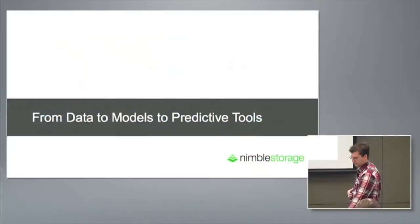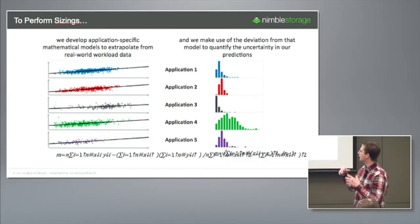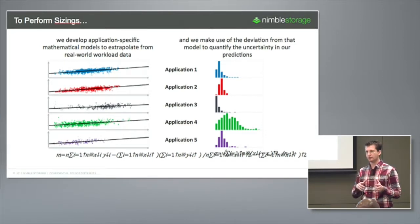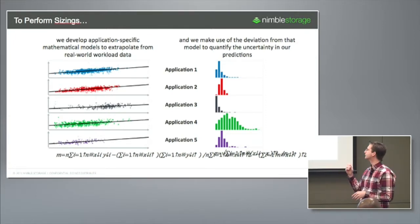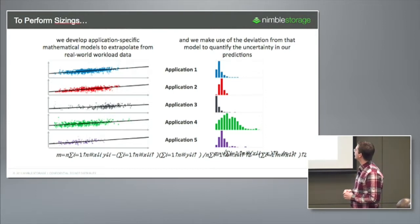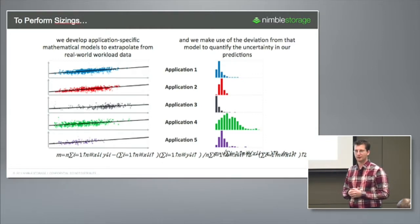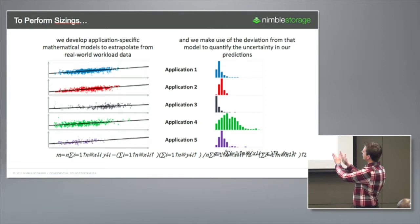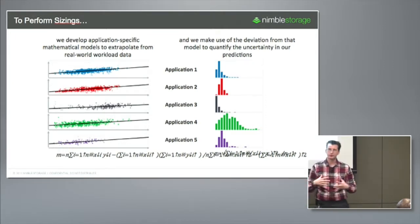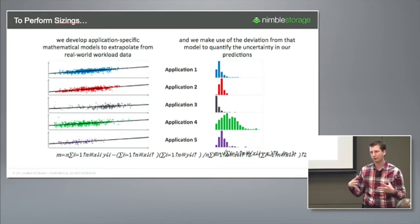To give you a little bit of an explanation for how we go from data to models to predictive tools at a high level: we really try to leverage the data itself to give us the functional forms we need to understand what we need for sizing per unit workload — gigabyte and IO. We basically try to extrapolate from that data, making as few assumptions as possible, and capture the distribution of points around those models to understand what the natural variance in those workloads is.